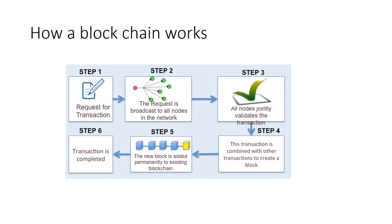Now let's discuss how blockchain actually works. It is a distributed ledger and the transactions are immutable. Any peer in the network can send a request to perform some transaction. Suppose Alice wants to transfer money to Bob — she requests the transaction.